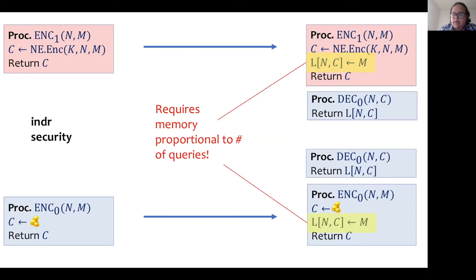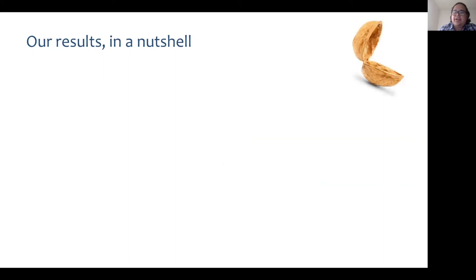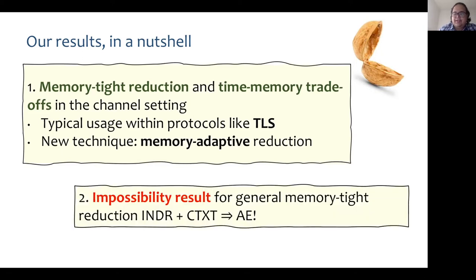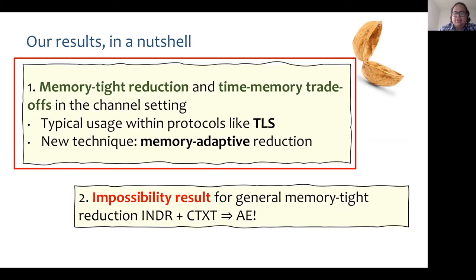In a nutshell, our results are centered around the question of whether we can make the reduction memory-tight. First, we show that we can indeed make this reduction memory-tight in the restricted setting of channels. This setting captures usage in protocols like TLS. We introduce memory-adaptive reductions, a new technique for giving memory-tight reductions where the memory of the reduction depends on the memory of the adversary. Secondly, we give an impossibility result for a memory-tight reduction in the most general setting of nonce-based authenticated encryption.